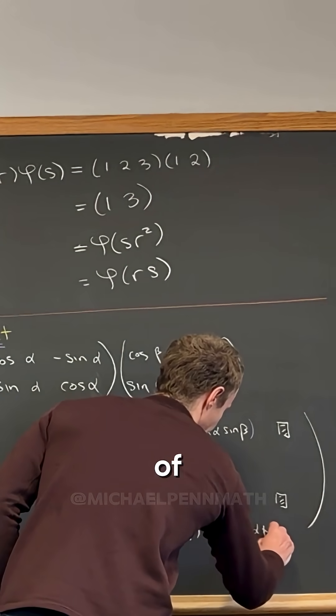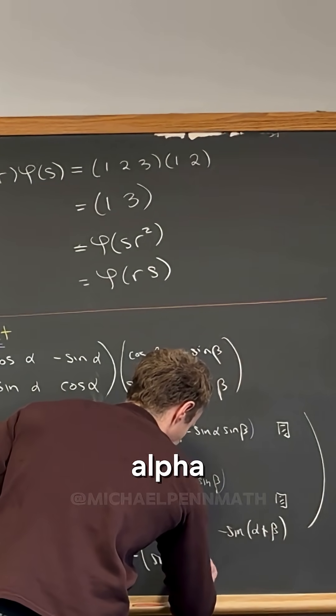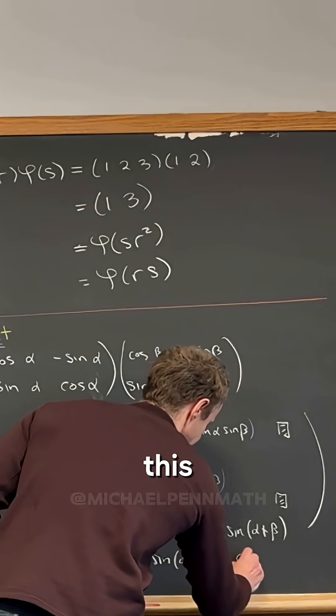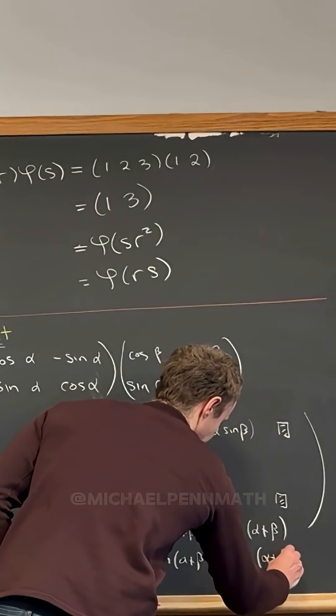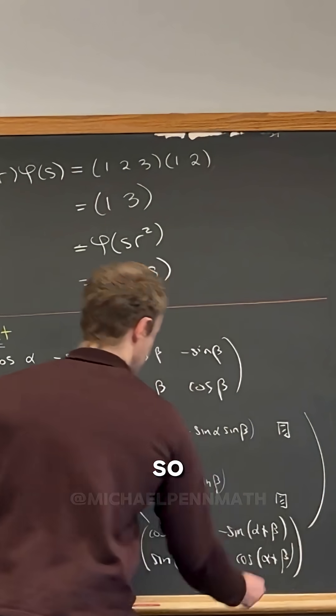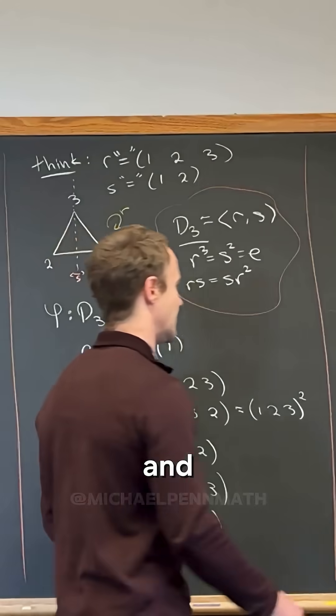This is the sine of alpha plus beta, and then this is the cosine of alpha plus beta. So that's those, and in fact...